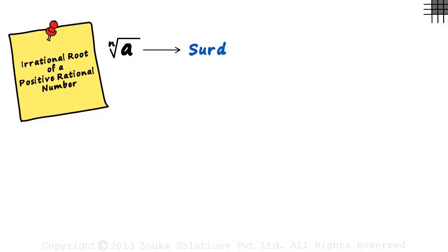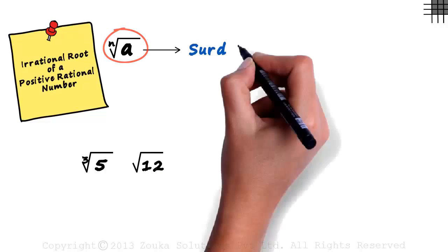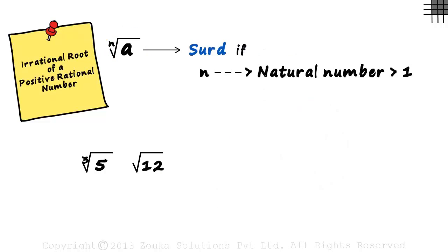Some examples of a SIRD are cube root of 5 or square root of 12. There are a few conditions we need to keep in mind. The first condition says that this is a SIRD if n is a natural number greater than 1. The order or the index has to be greater than 1.